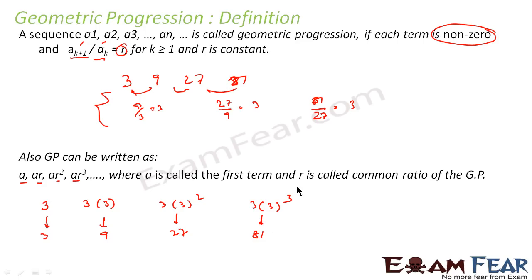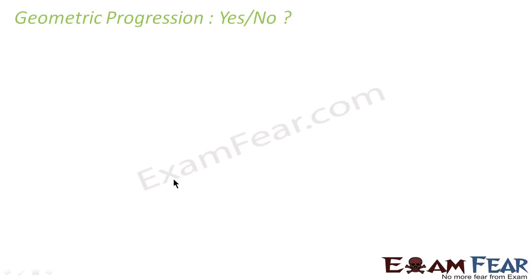Please note: you can write a GP in the form a, ar, ar², ar³, ..., ar^(n-1), where a is the first term and r is the common ratio. Let's take some examples to determine whether a sequence is a GP or not.